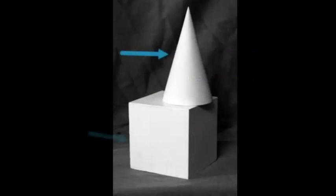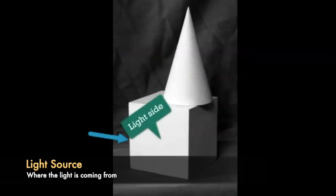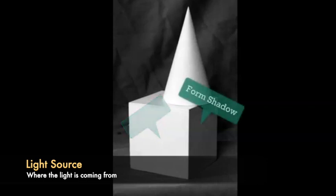When talking about basic forms, the arrows represent where the light is coming from. You should always have a clear understanding of the light source. The light side is on the left and the right side is in shadow — that's true of both the cone and the cube, though it's more obvious on the cube. Whenever you do a cube, you should have a light side, a medium side, and a slightly darker side.